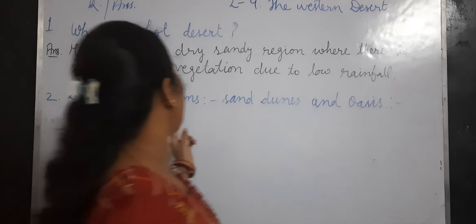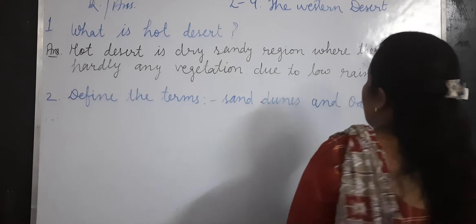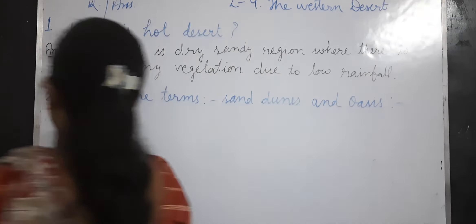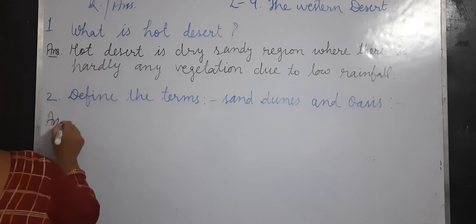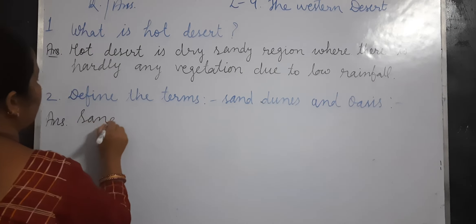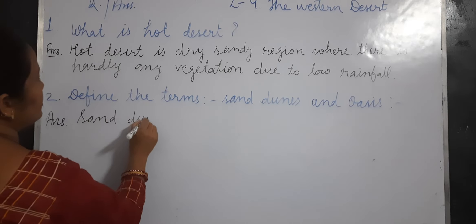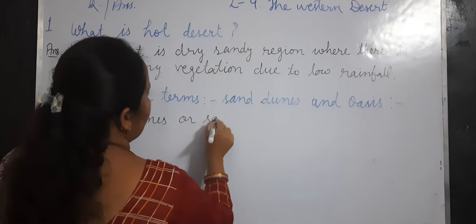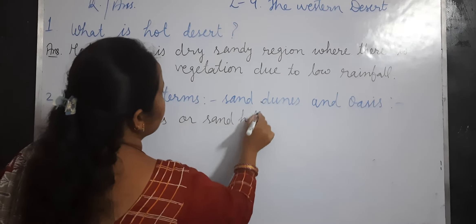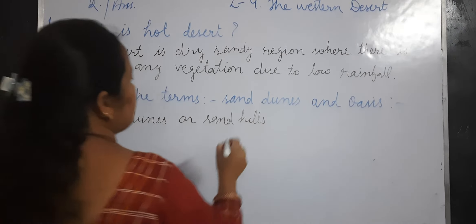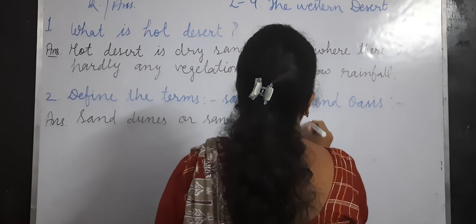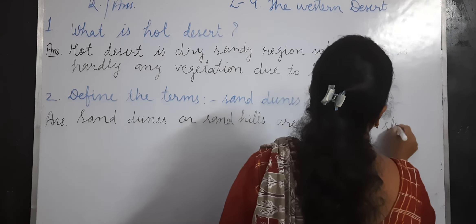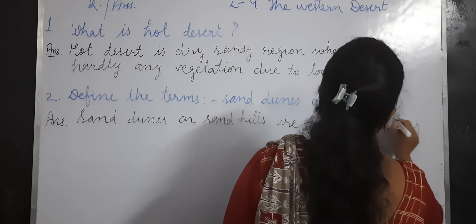The next question is: define the terms sand dunes and oasis. The answer is sand dunes are sand hills. Sand dunes are made by strong winds.